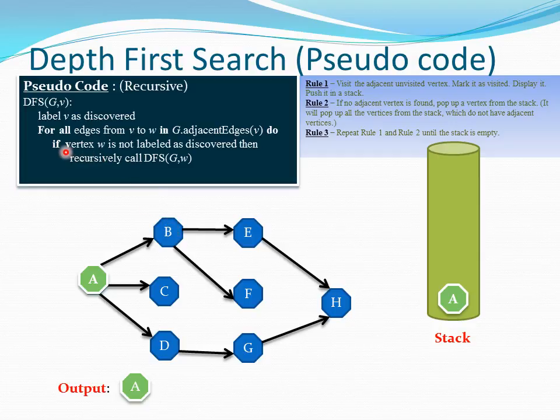We are checking if vertex w is not labeled as discovered then we call DFS again. This is where the first rule we are applying. If not discovered, we are calling this function again. It will bring B as v and label that as discovered. Then again we are calling the for loop, so from B we are searching the adjacent. First we have E in the iteration.